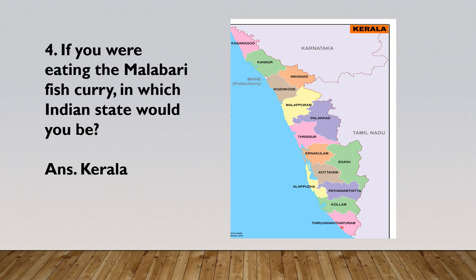The language spoken here is Malayalam. The state animal is elephant, state bird is Great Indian Hornbill, and the state flower is Golden Shower tree. The state tree is coconut. Also, 90% of India's rubber production is done here. This state is also called the Spice Garden of India.